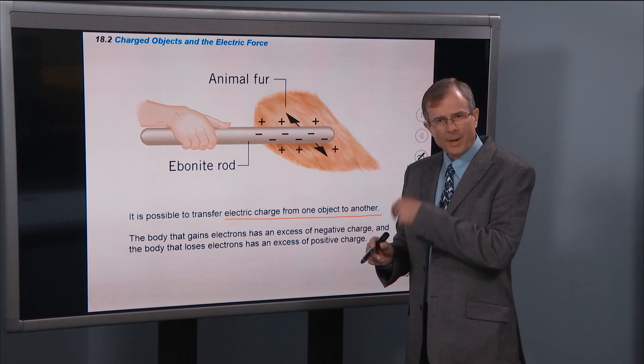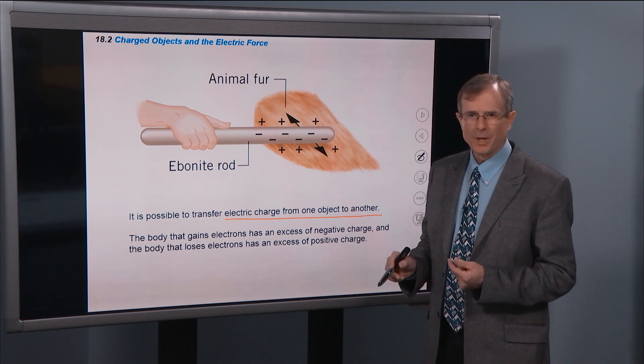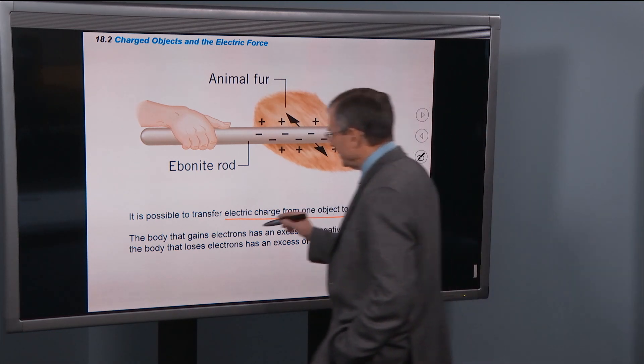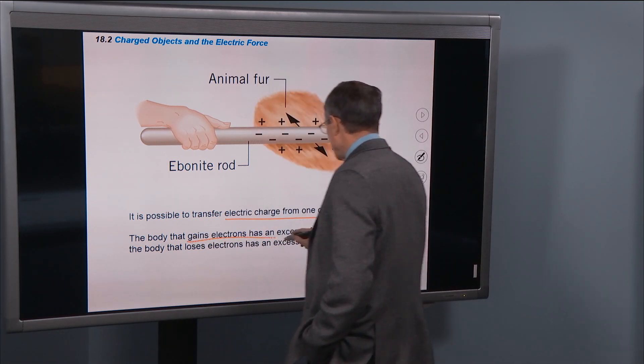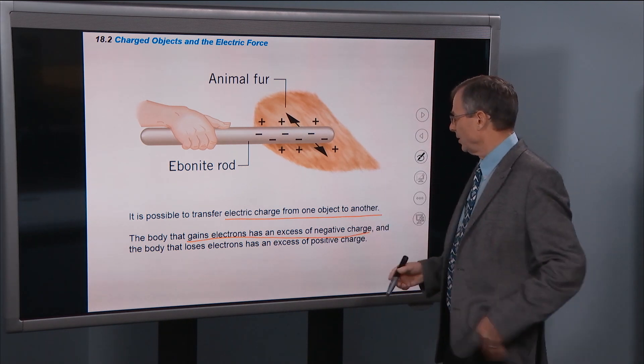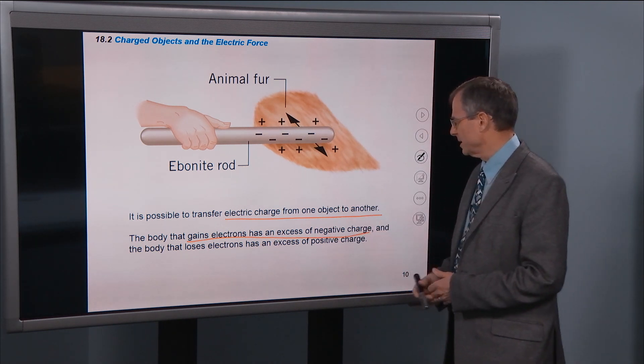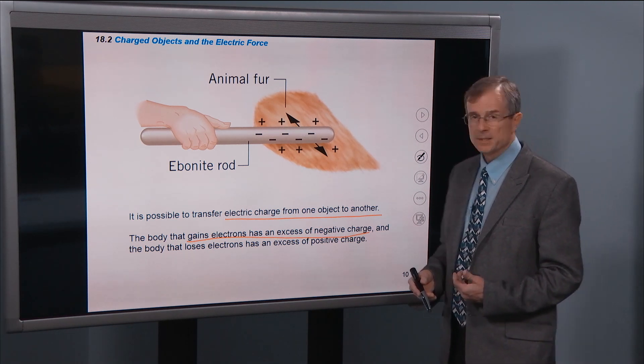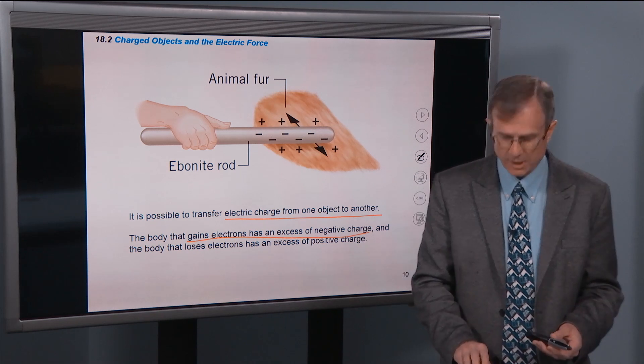you rub electrons from the fur onto the rod, as we'll talk about. And a body that gains electrons, just like we talked about in the last section, will have a negative charge, an excess of negative charge. And a body that loses electrons has an excess of positive charge, just like we talked about.